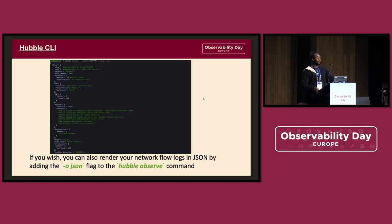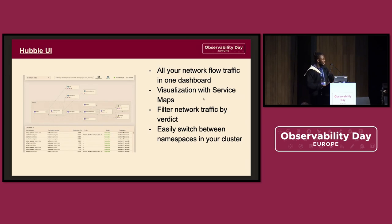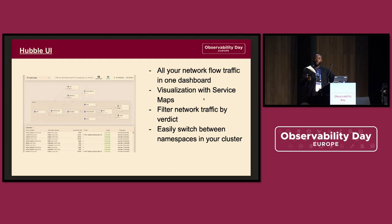If you wish to render your network traffic to JSON, you can just run 'hubble observe' and add the flag '-o json', and it's going to render every single traffic event in JSON, which is really useful. The Hubble UI provides a graphical interface where you can see all your network flow traffic in one dashboard. It gives you visualization with service maps, lets you filter network traffic by verdict — meaning is this connection dropped or allowed — and you can easily switch between namespaces in your cluster.